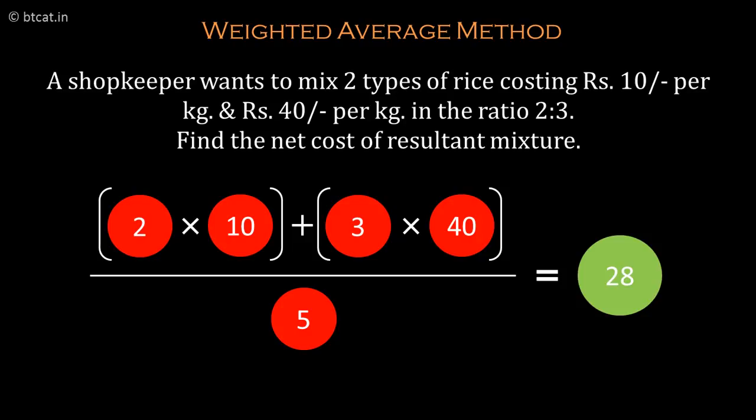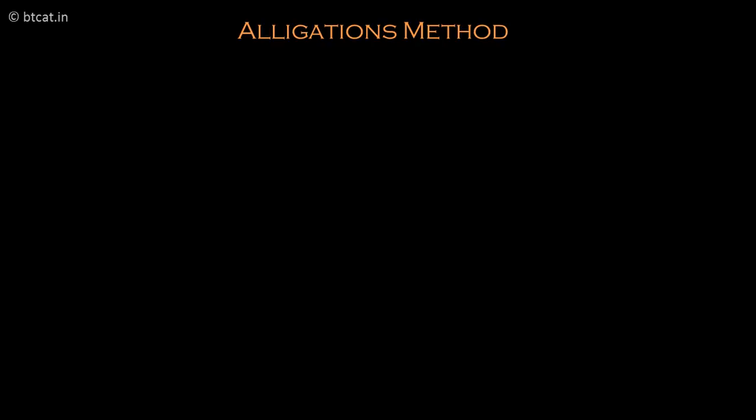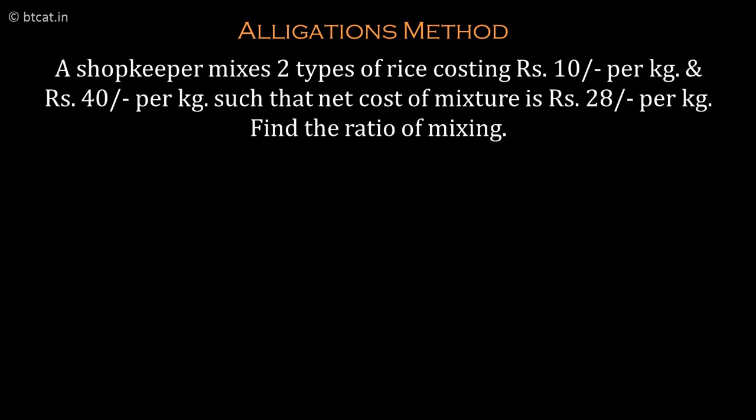Allegation is the inverse question. The question might be: a shopkeeper mixes two types of rice costing 10 rupees per kg and 40 rupees per kg such that the net cost of the mixture turns out to be 28 rupees per kg — find the ratio of mixing. In allegation, you write the two initial quantities on the top: 10 and 40, and the resultant 28 in between them.